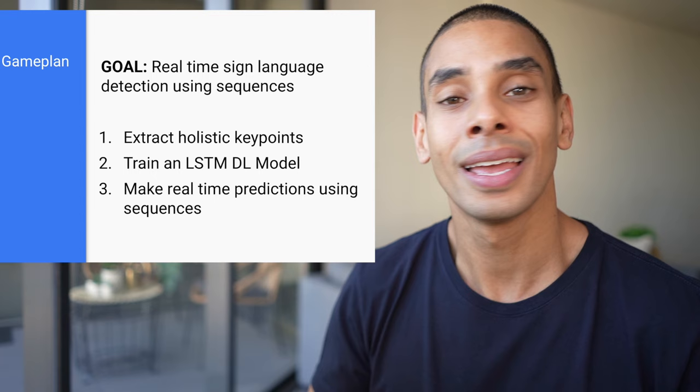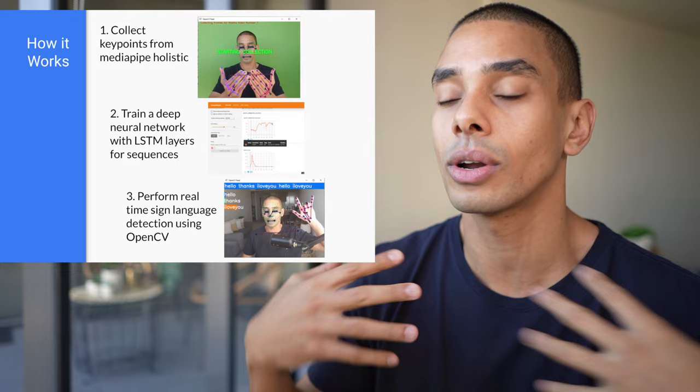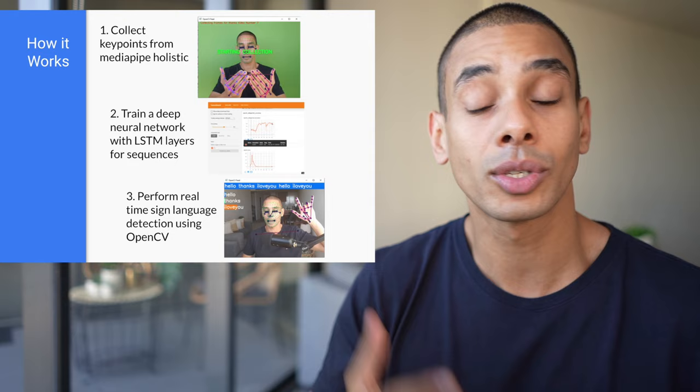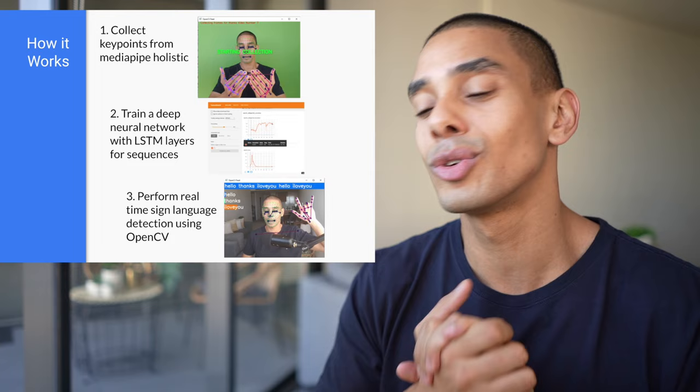We'll take MediaPipe Holistic and our trained LSTM model and predict signs in real time. First, we'll collect data on key points from hands, body, and face, saving those as NumPy arrays. Then we'll train a deep neural network using LSTM layers to predict the temporal component — predicting an action from a number of frames, not just a single frame. Finally, we'll put it all together using OpenCV and predict in real time using a webcam.